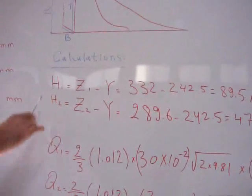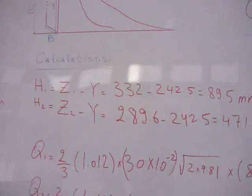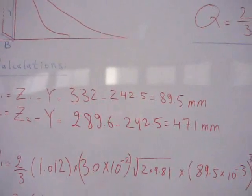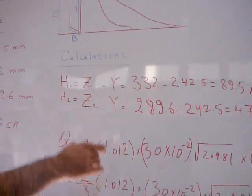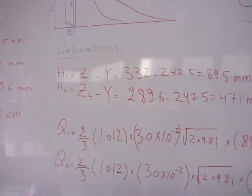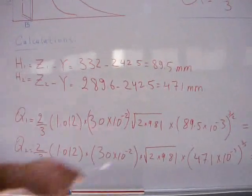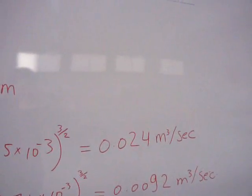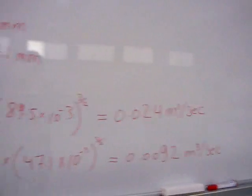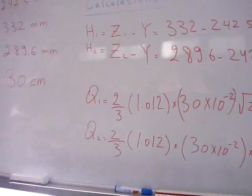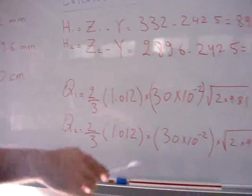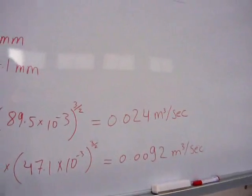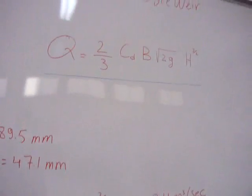From calculations, we get H1 and H2 for two different heights of water over the ogee weir. We put these values in the formula for the discharge. We get Q1 equals 0.024 cubic meters per second for the first flow rate, then Q2 equals 0.092 cubic meters per second for the decreased flow rate.